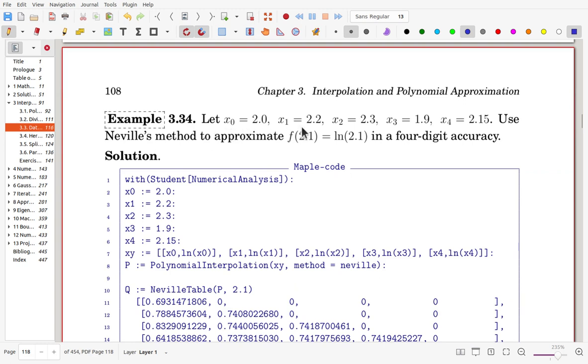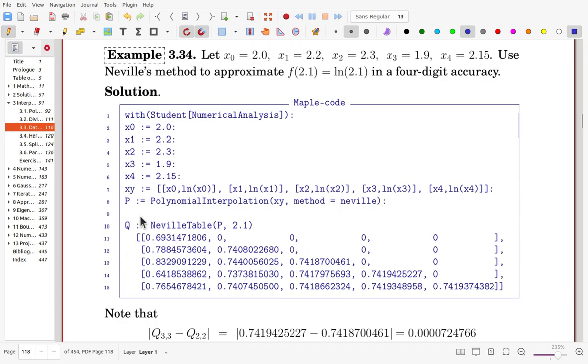Now, x0 is 2, and x1 is 2.2, 2.3, 1.9, 2.15. We'll use Neville's method to approximate f(2.1), which is natural logarithm, in 4-digit accuracy. So underlying function is logarithm. We can get here data, these are x values, and using logarithm, we can collect the data points. By using the Neville method, we make interpolation, and we can get the Neville table.